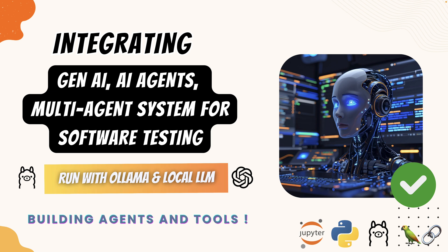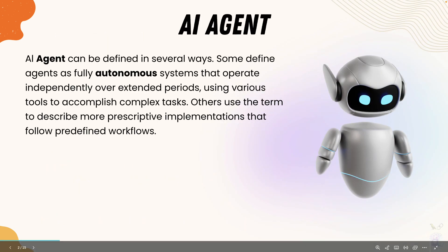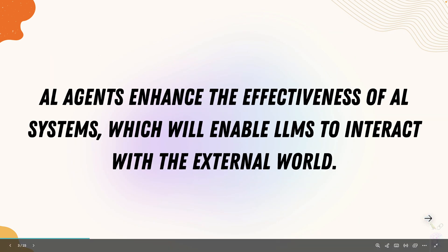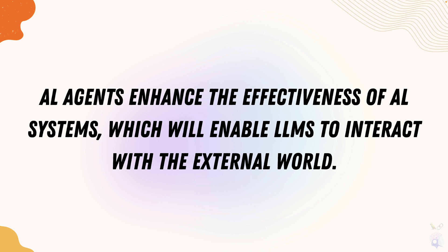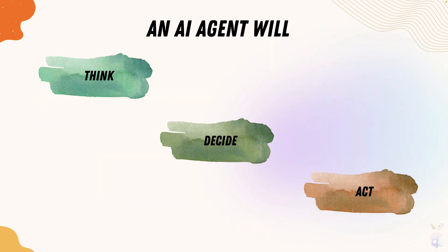We already talked about what agents are in our earlier sections. An AI agent can be defined in several ways. Some define agents as a fully autonomous system that operates independently for an external period of time, using various tools to accomplish complex tasks. AI agents enhance the effectiveness of the AI system by enabling LLMs to interact with the external world. These AI agents will think, decide, and act for a given task — which is the power of an AI agent.